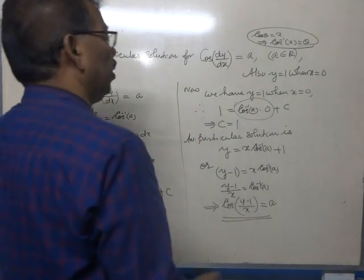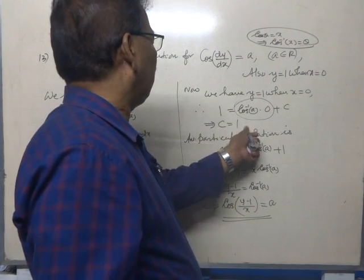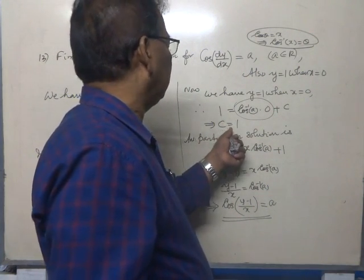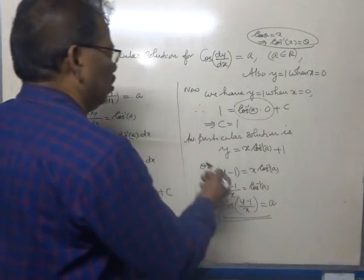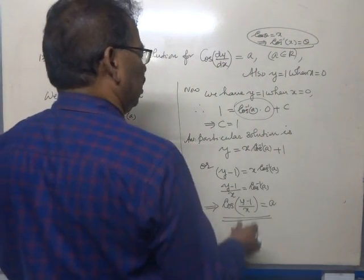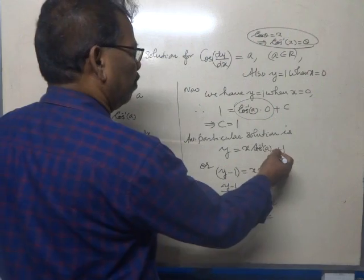That means we got the constant of integration c to be 1. Now, the particular solution can be taken out: y is equal to x cos inverse a plus 1.